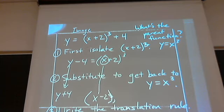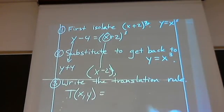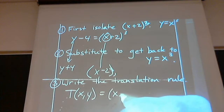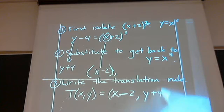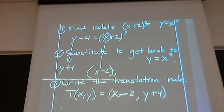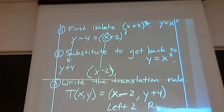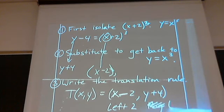So, write the translation rule. The translation rule says x minus two, comma, y plus four. This was left two, right, or up, sorry, up four.